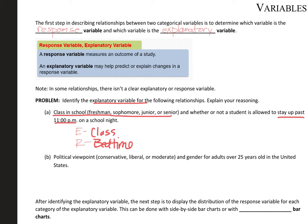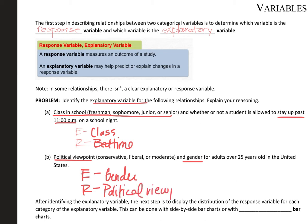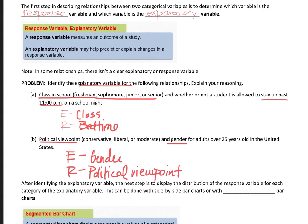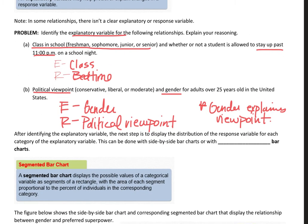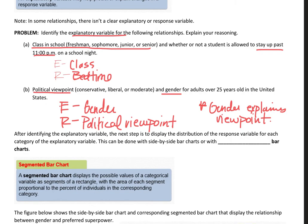Next: political viewpoint — whether you're conservative, liberal, or moderate — versus gender. I don't think political viewpoint is going to explain your gender, but I do think your gender could explain how you align politically. So in this case, gender is probably our explanatory variable and political viewpoint is our response. The reasoning: gender explains viewpoint. And for the first one: class explains bedtime.